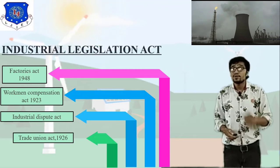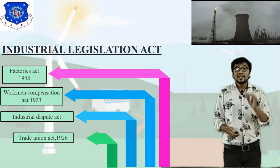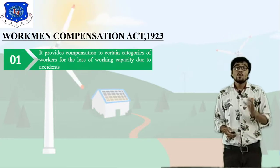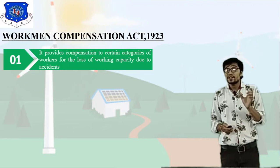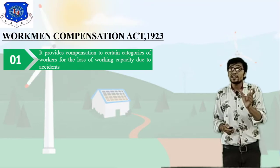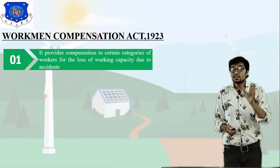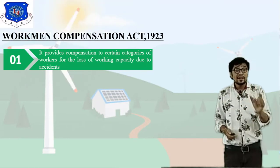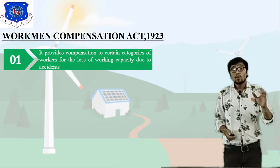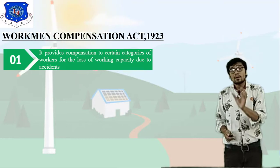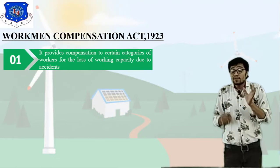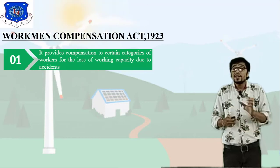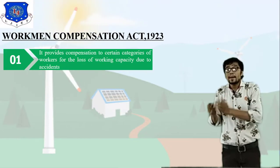The first important question is: what do you understand by the Workman Compensation Act 1923? It is a combination of two words — 'workman' and 'compensation.' Workman relates to the worker, labor, or production engineer. The act provides compensation to certain categories of workers for the loss of working capacity due to an accident.